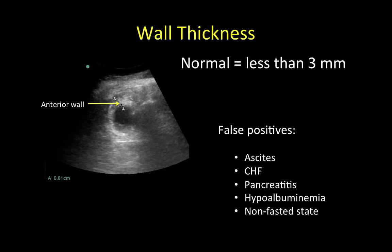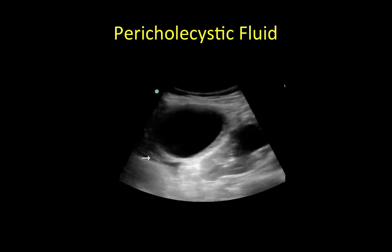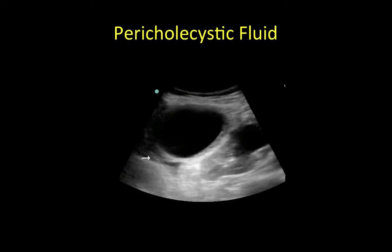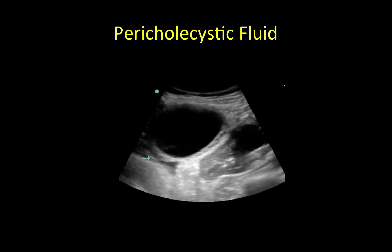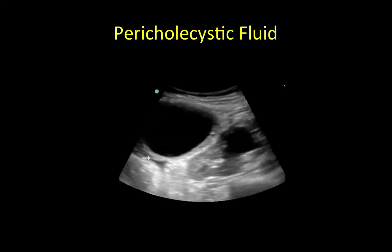This example in the transverse orientation shows a thick gallbladder wall measured at 8.1 millimeters. This gallbladder in the longitudinal view has a large gallstone lodged in the neck and a wall thickness that measures 6.6 millimeters. Pericolecystic fluid is a feature of cholecystitis in which localized fluid collections are observed adjacent to the gallbladder. Careful examination of such fluid collections is warranted to ensure that the fluid is not contiguous with the peritoneum as seen with ascites.